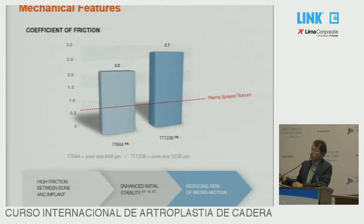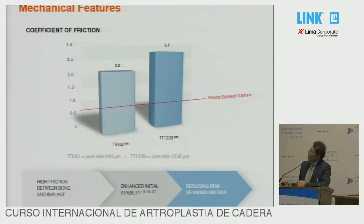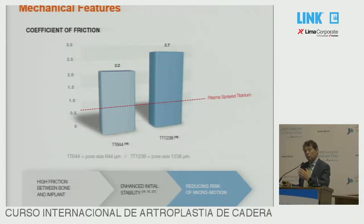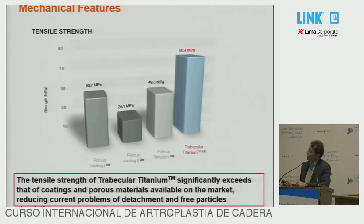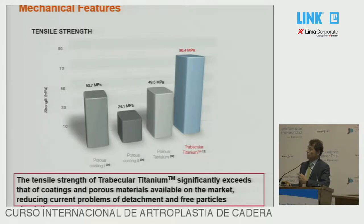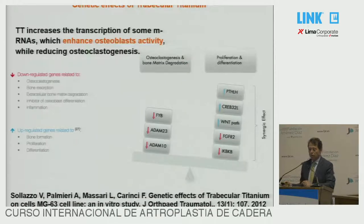This is trabecular titanium with double porosity. You will see the double porosity in the augments used in revision cases. The augments have exactly the double porosity, but this is not for biological purposes — it's for engineering purposes only. Being an augment, a porous structure with no bulky supporting structure needs double dimensional porosity for cleaning of the structure. The tensile strength is also extremely good and exceeds that of coatings and other porous materials available on the market.